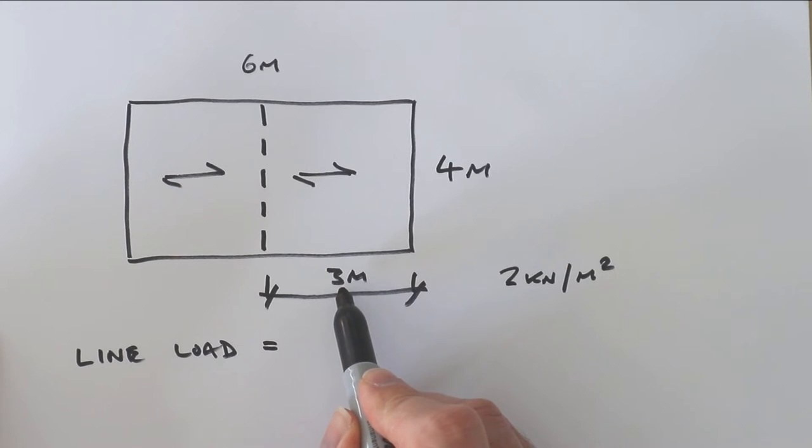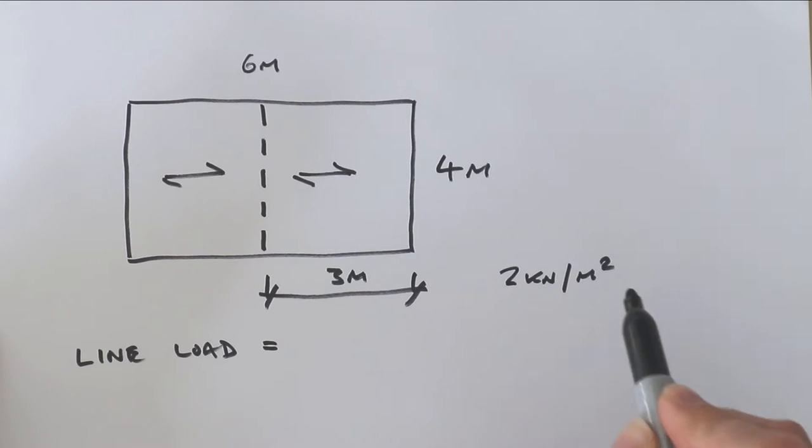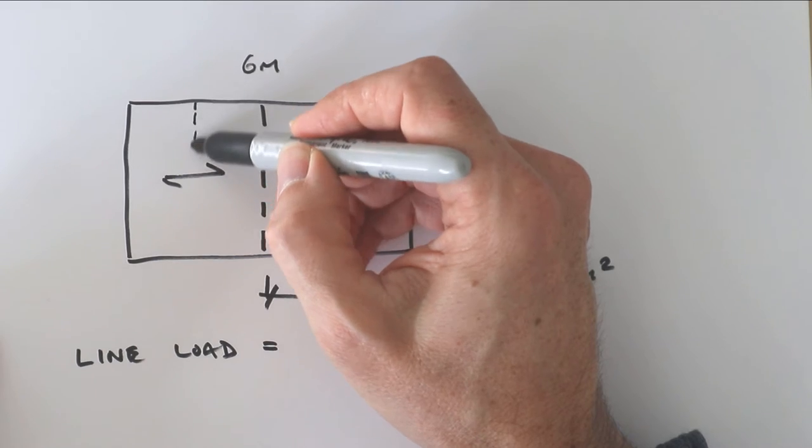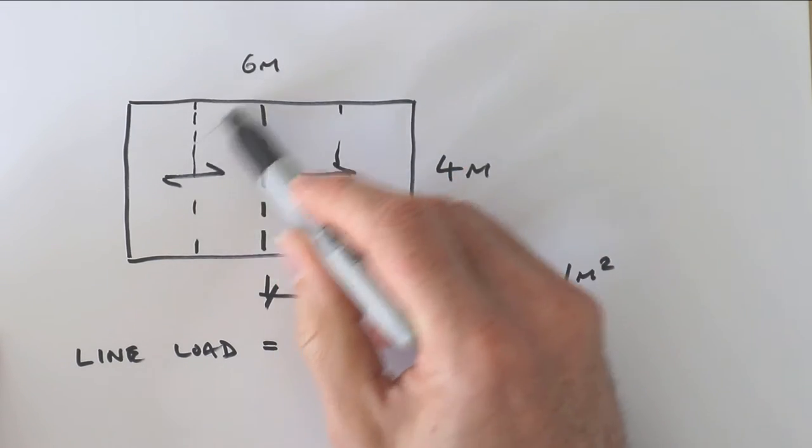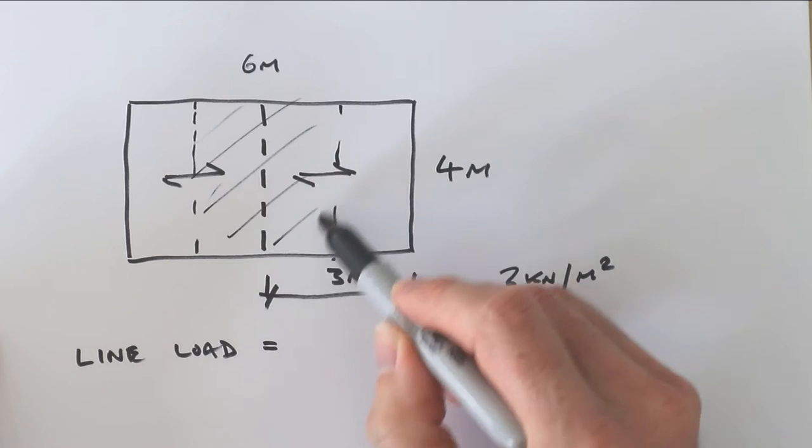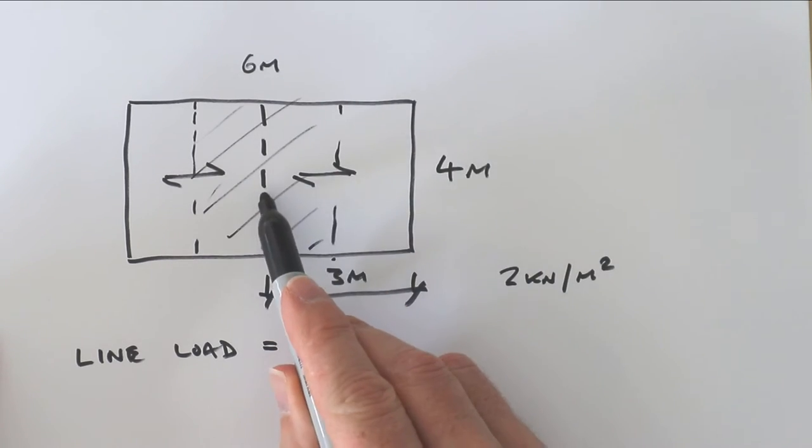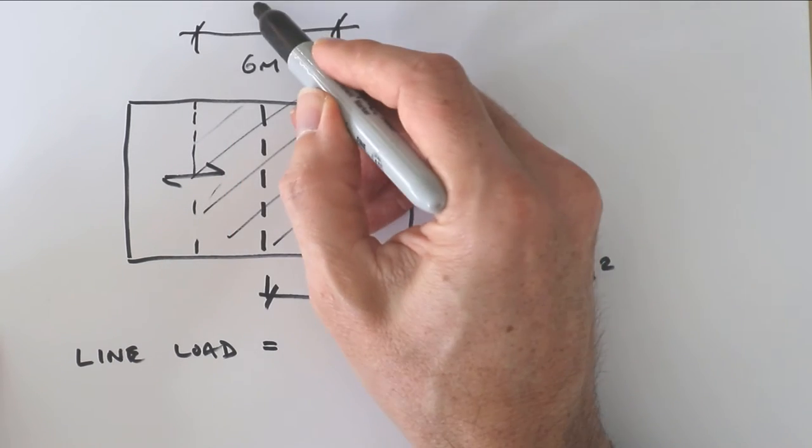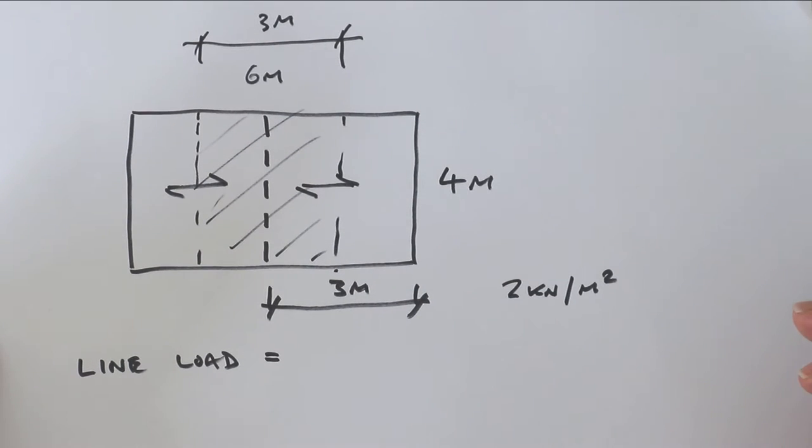Well, it's going to be three meters multiplied by two kilonewtons per meter squared. The reason for that is we're taking this part of the roof here as the contribution of load on our flitch beam. So it's this dimension here, which is three meters. The line load is three meters times two kilonewtons per meter squared, which equals six kilonewtons per meter.